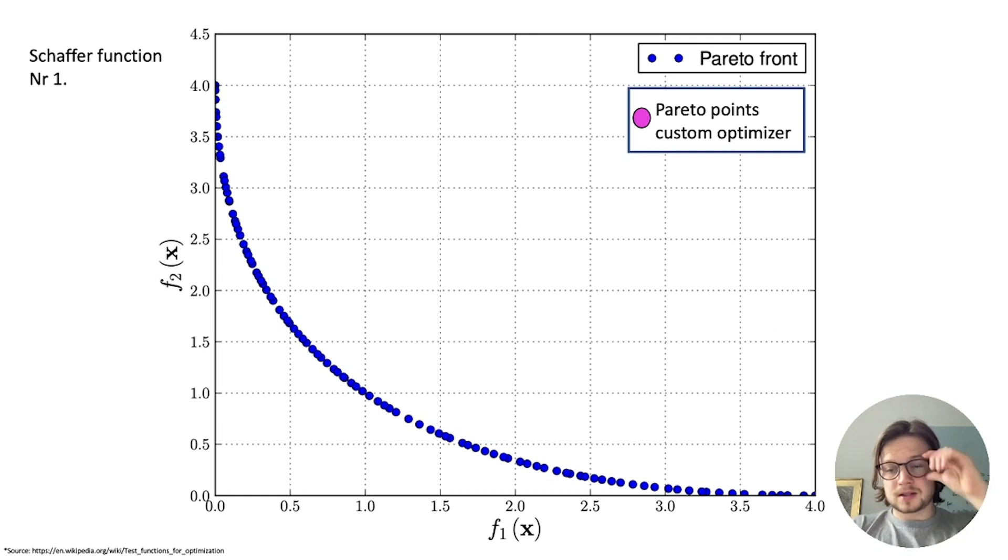And perhaps when our custom optimizer runs, the Pareto front that he gives us in the end are perhaps five points and they are situated or located like you see them here. And I think you get the message out of this one picture already.